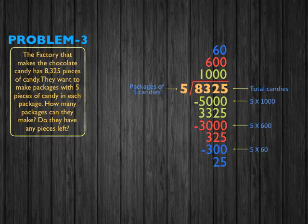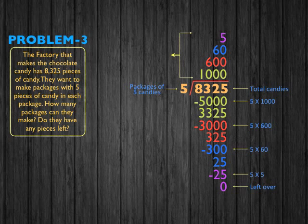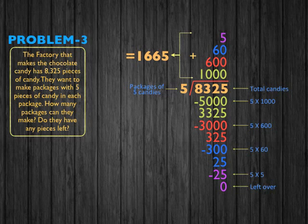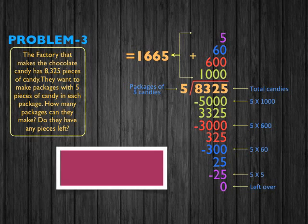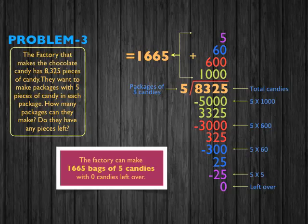Now, how many packages can we make out of 5 candies to get 25? Well, 5. Because 5 times 5 equals 25. So 25 minus 25 is 0 — we have 0 candies left over. Now we add all the packages together: 1,000 plus 600 plus 60 plus 5, which gives us a total of 1,665 packages. The factory can make 1,665 bags of 5 candies each with 0 candies left over.